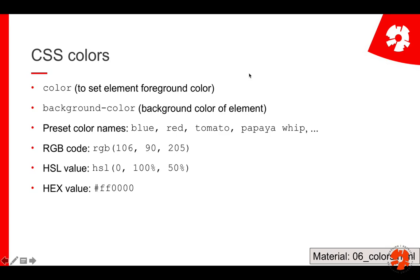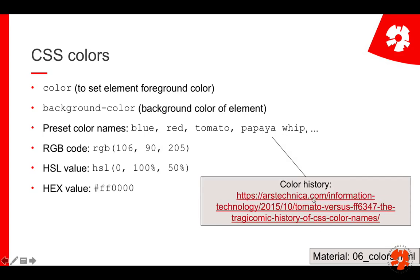Now you have seen colors and two different ways of setting the color. You have the preset color names — red, tomato, blue — and there are a number of really bizarre names. There are also three more standard ways of defining color: hex values, RGB, and HSL. RGB is red, green, blue from 0 to 255. HSL is hue, saturation, lightness — percentage and a value between 0 and 100.